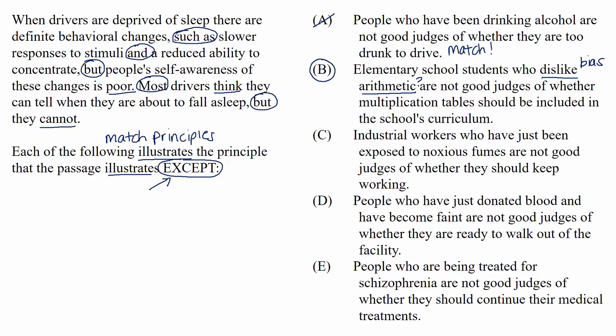Let's look at the remaining choices in case you have questions on them. Choice C: industrial workers who have just been exposed to noxious fumes are not good judges of whether they should keep working. This is a beautiful match for the passage's situation. We have a physical condition — being exposed to noxious fumes — and that physical condition is exactly what's causing the workers to not be good judges of whether they should keep working. The fumes are impairing their decision-making abilities.